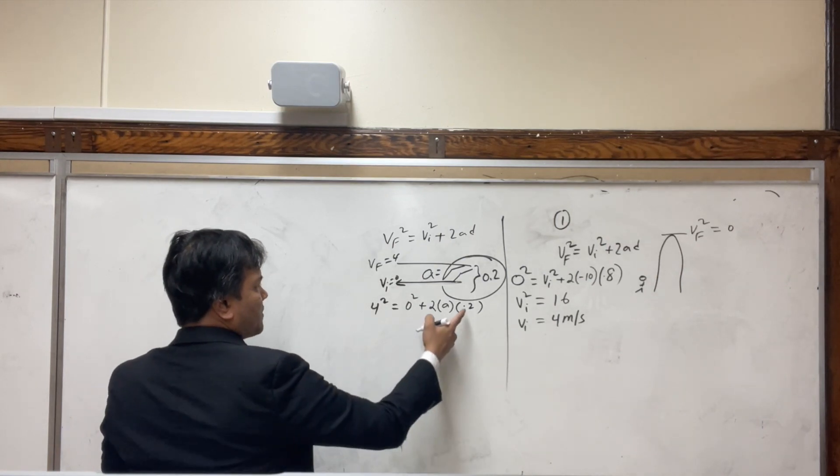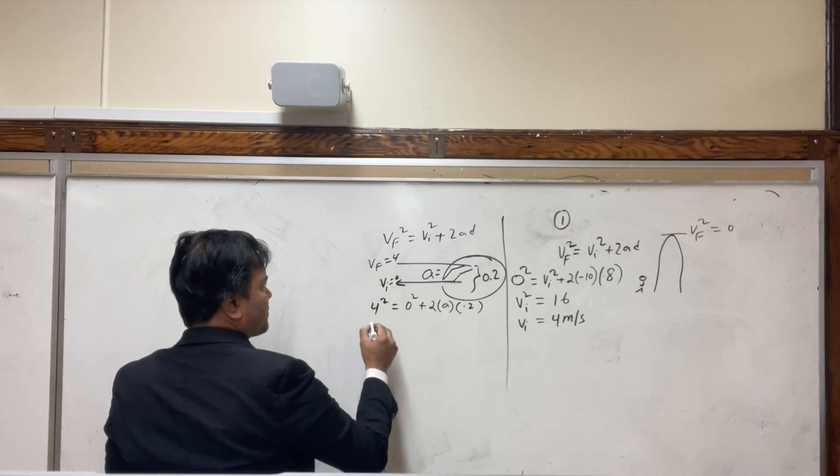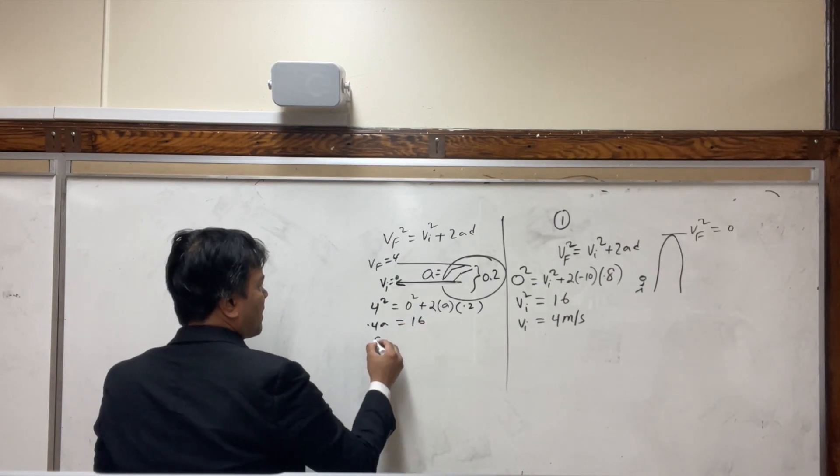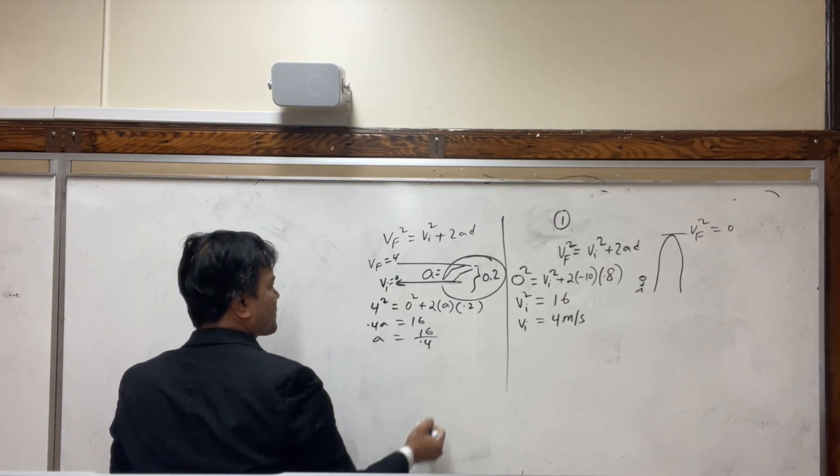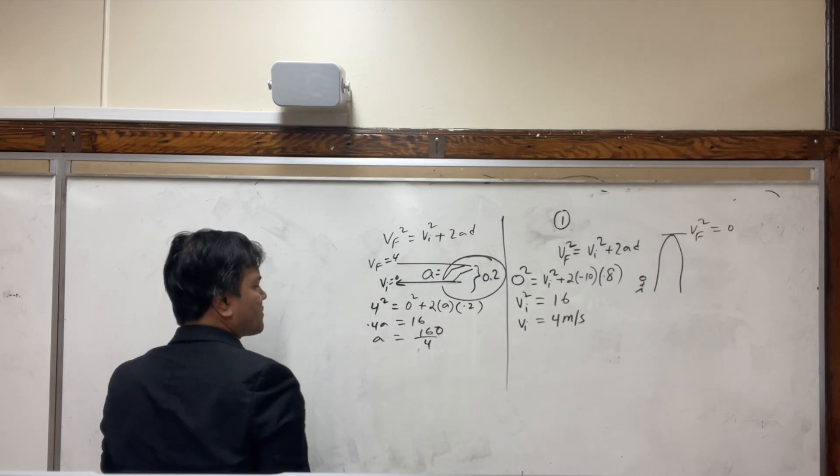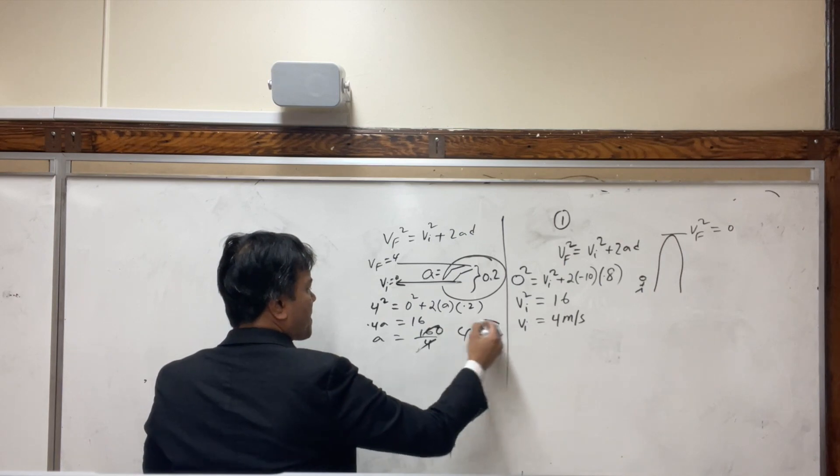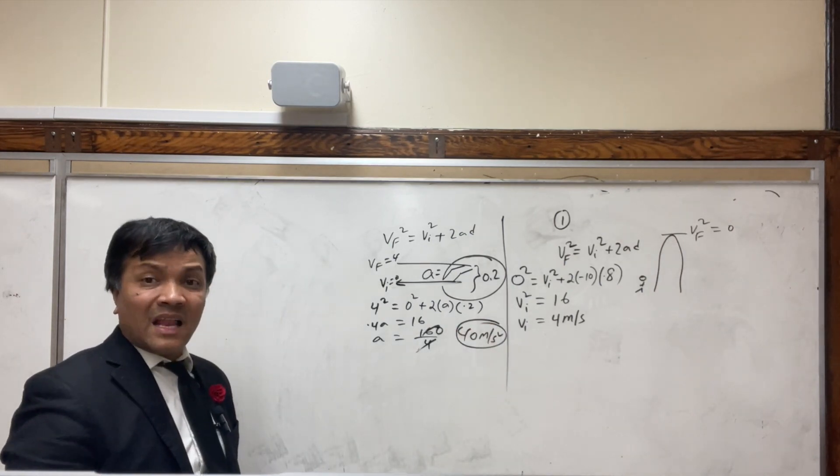I'm going to bring this over: 0.4a is equal to 16. a is equal to 16 over 0.4, so 160 over 4 is 40 meters per second squared. A lot.